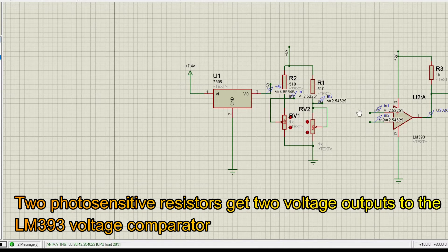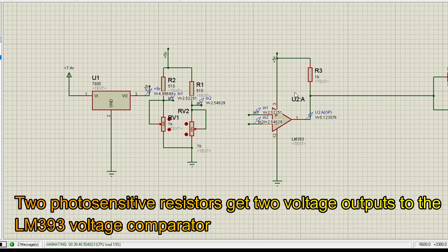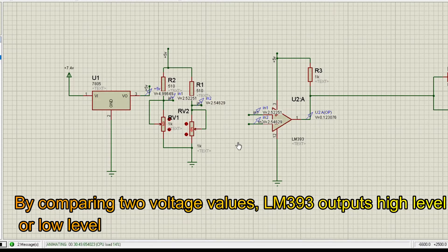Two photosensitive resistors get two voltage outputs to the LM393 voltage comparator. By comparing two voltage values, LM393 outputs high-level or low-level.